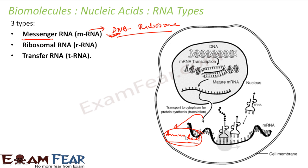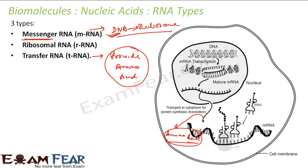Messenger RNA does the messaging part — it takes the DNA sequence, converts it into an amino acid sequence, and gives it to the ribosome. Transfer RNA then recognizes that amino acid sequence and provides the actual amino acids, which are used to create protein. These amino acids are provided by transfer RNA.